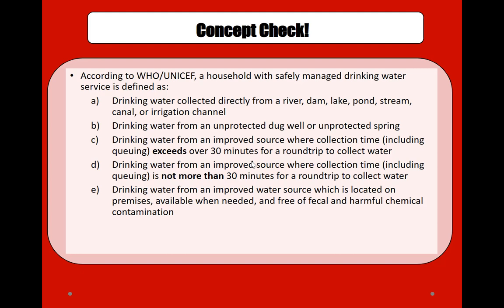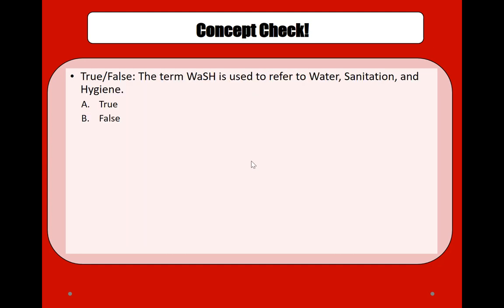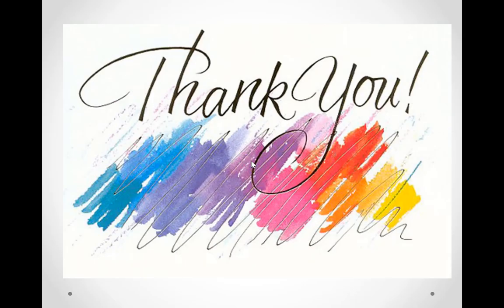That will be the big challenge in the next decade. Let's do some quick concept checks. According to WHO and UNICEF, a household with safely managed drinking water service is defined as drinking water from an improved water source which is located on premises, available when needed, and free of fecal and harmful chemical contamination. Another quick concept check: the term WASH is used to refer to water, sanitation and hygiene — true.